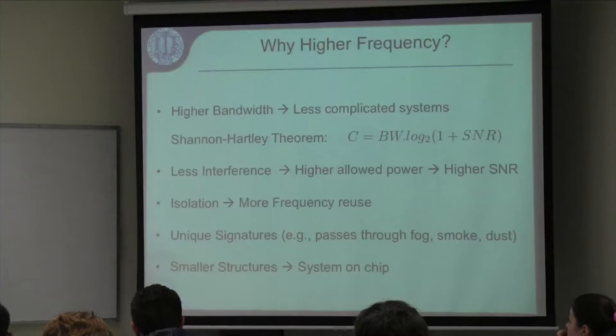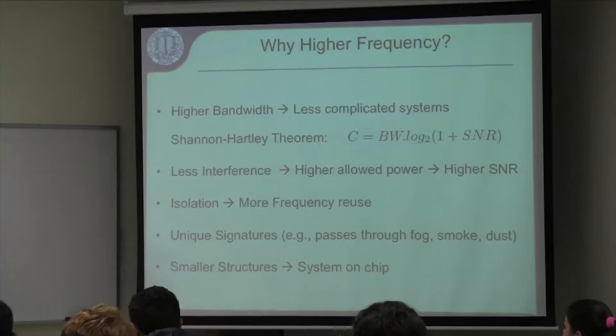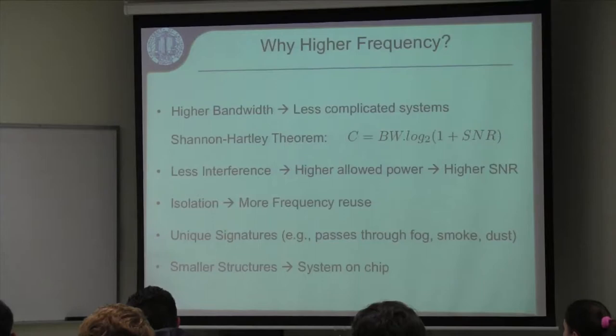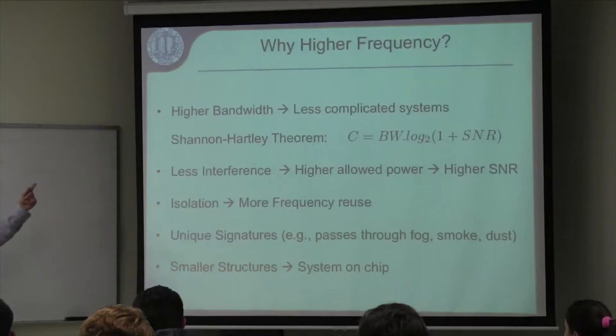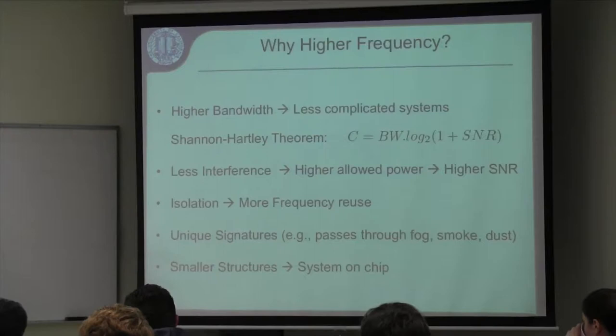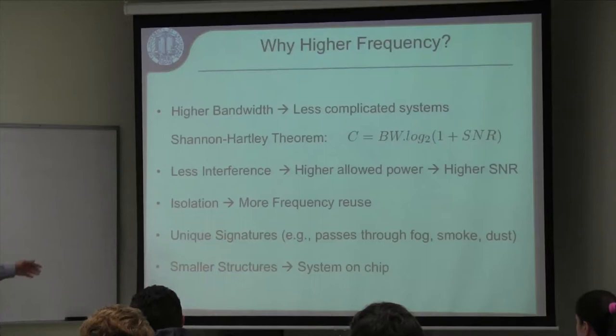The second reason is less interference. At higher frequencies, air absorption is higher, so at the same distance you receive less power at 60 or 70 gigahertz than at 1 gigahertz. This means more isolation and less interference. When there's less interference, the FCC can allow you to transmit higher power, giving you better SNR and smaller channel spacing — so you can use the spectrum even more efficiently.